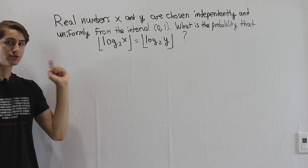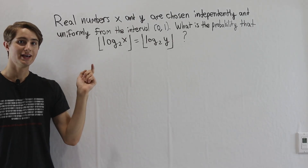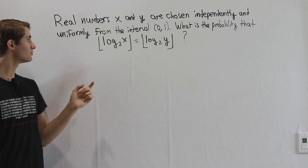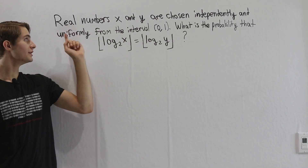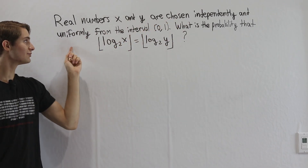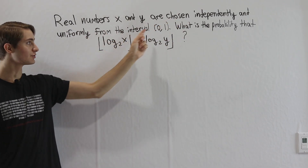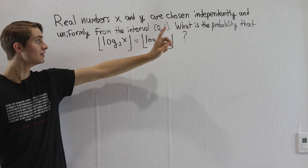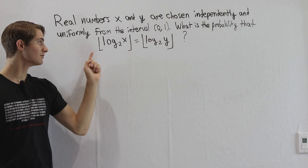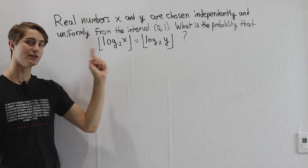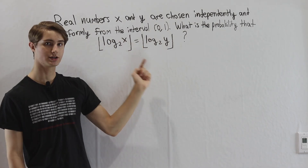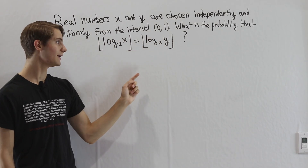We are going to do the 2017 AMC 12b problem 20. Real numbers x and y are chosen independently and uniformly from the interval (0, 1). What is the probability that the floor of log base 2 of x equals the floor of log base 2 of y?